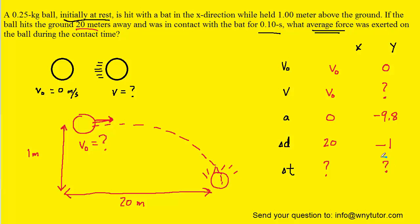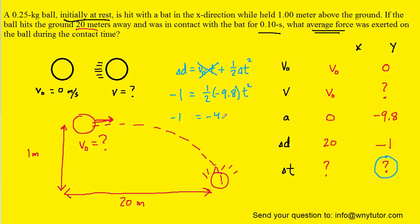In the y direction, we can use kinematics to find the time interval. Using the equation for displacement, the initial y-velocity term cancels since it's 0. We have displacement equals one-half times acceleration times t squared, giving us negative 1 equals negative 4.9 t squared. Dividing both sides by negative 4.9 gives approximately 0.204 equals t squared. Taking the square root gives about 0.452 seconds. The time in the x direction is the same, as in all projectile motion questions.